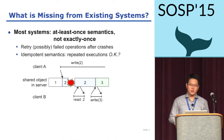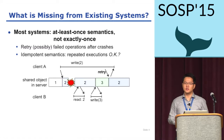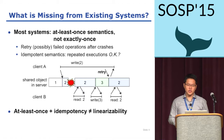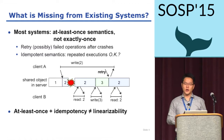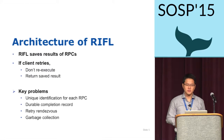Client B now updates the value to 3. Client A hasn't heard back from the server about its initial request of writing 2, so it retries the request. The server has no way to know it already processed the RPC, so it re-executes and the object value is changed to 2. Consequently, client B observes 2 writes from client A. From this example, we can see that we need exactly-once semantics, not just at-least-once semantics.